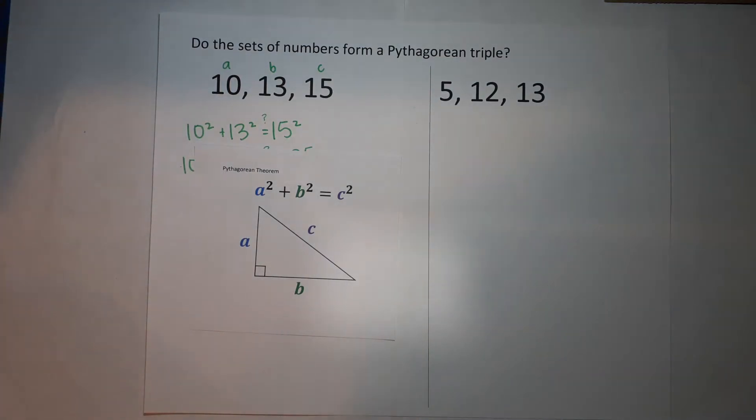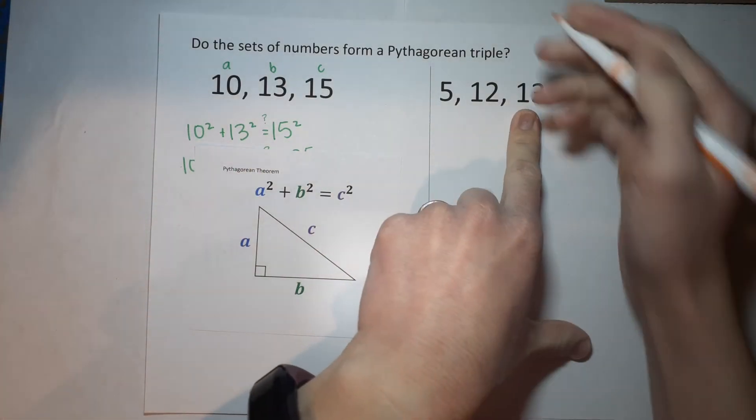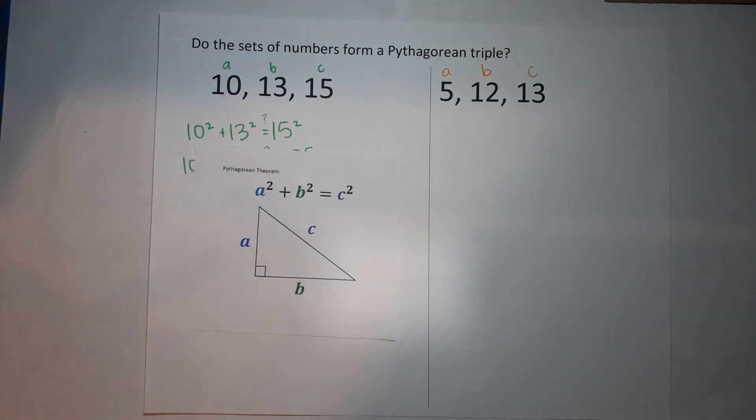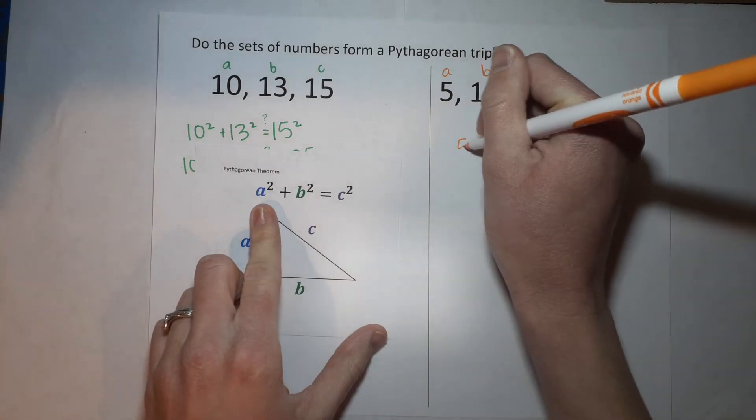So 5, 12, and 13—are these a Pythagorean triple? Well let's see, let's plug them in. Which one's my hypotenuse? Biggest one, so it's 13. So that is c, and these are a and b.